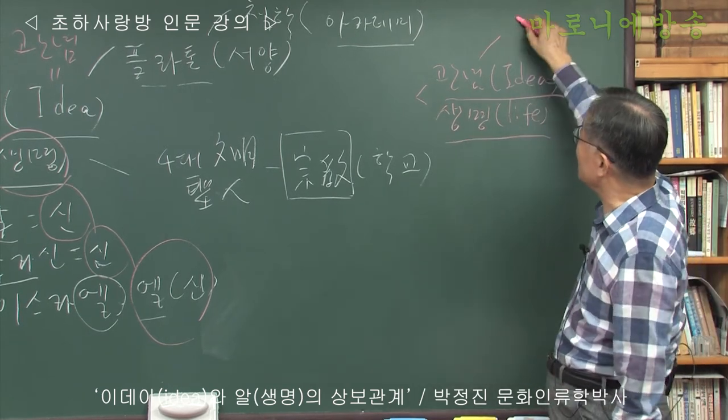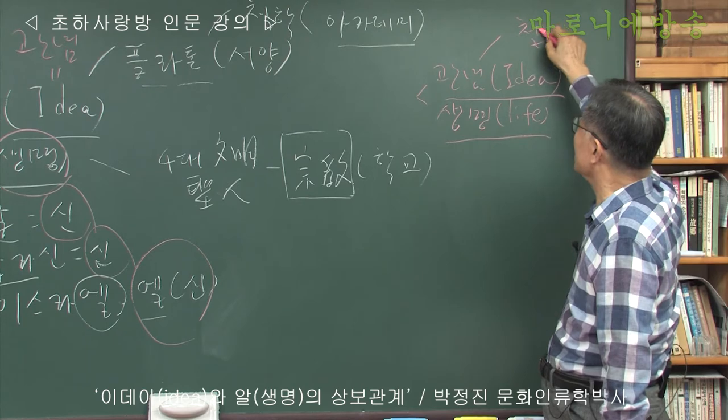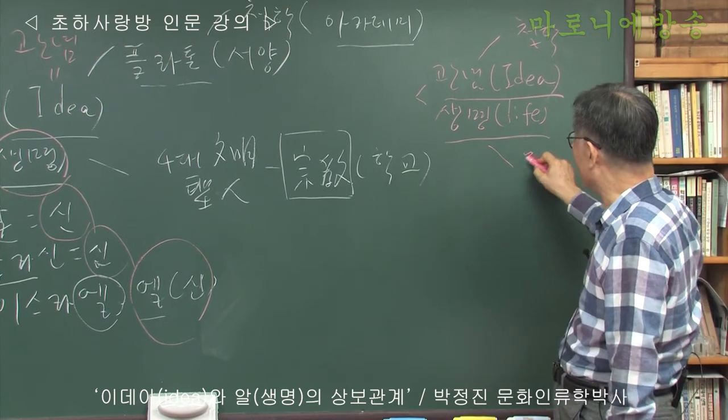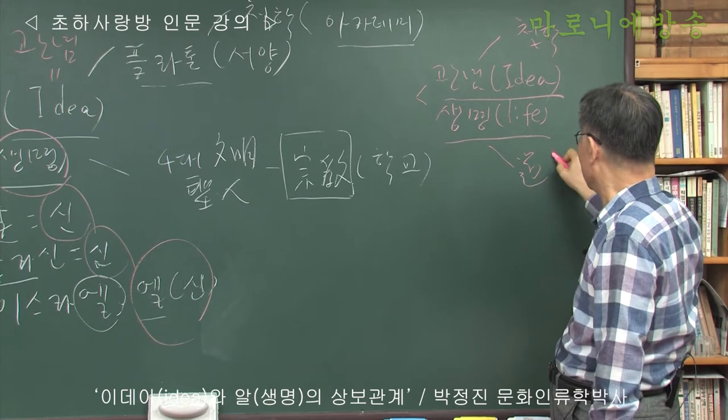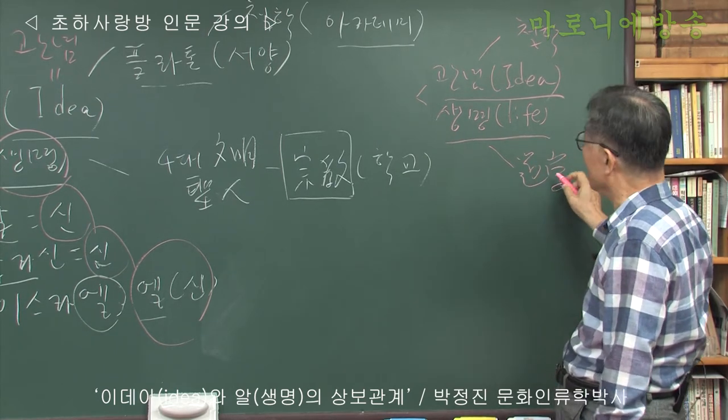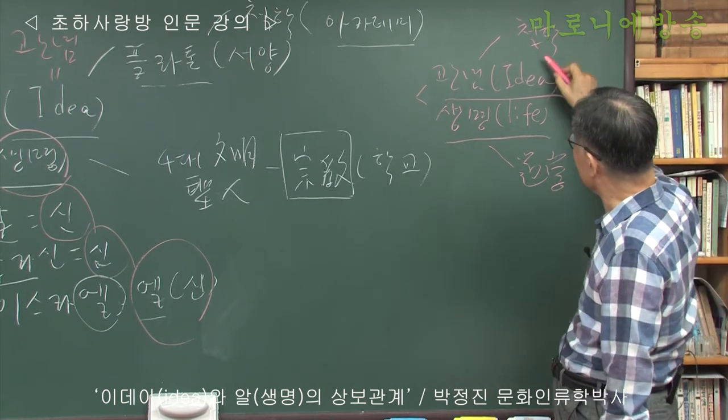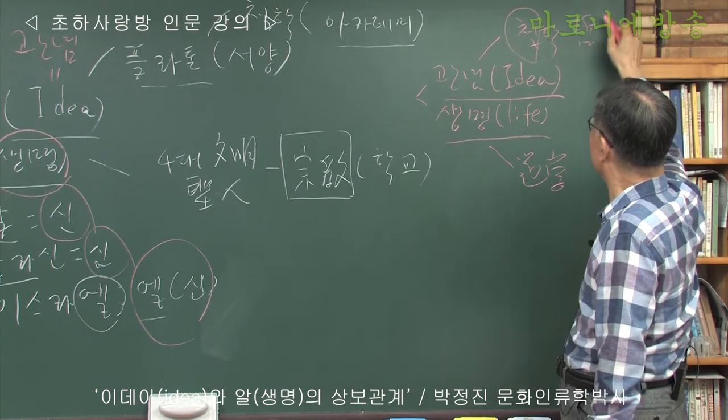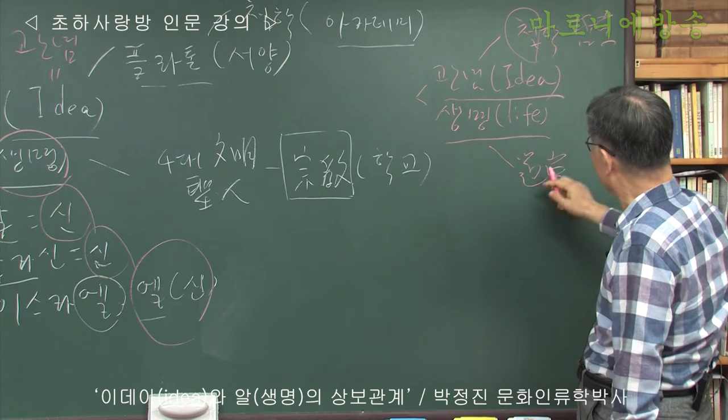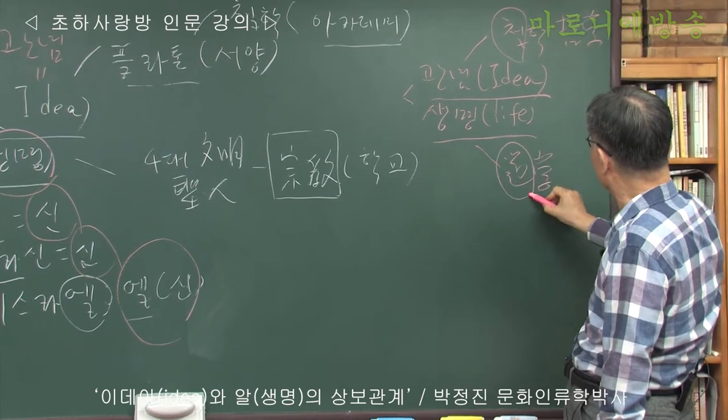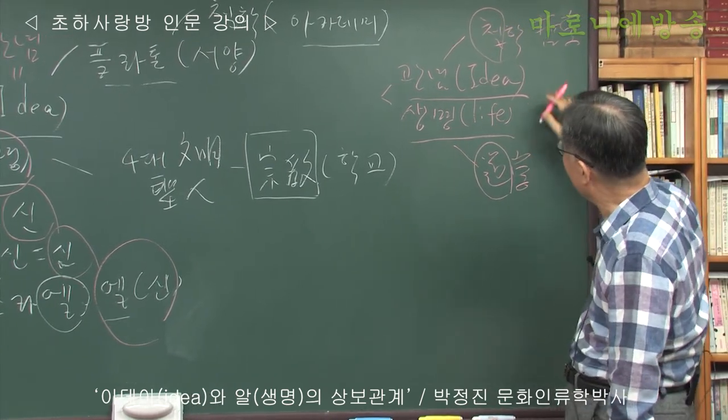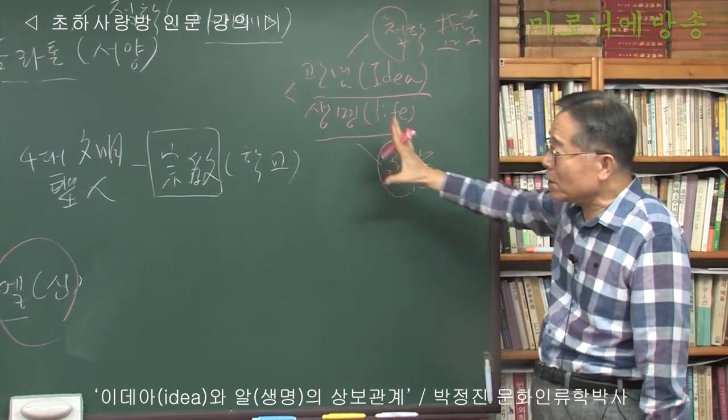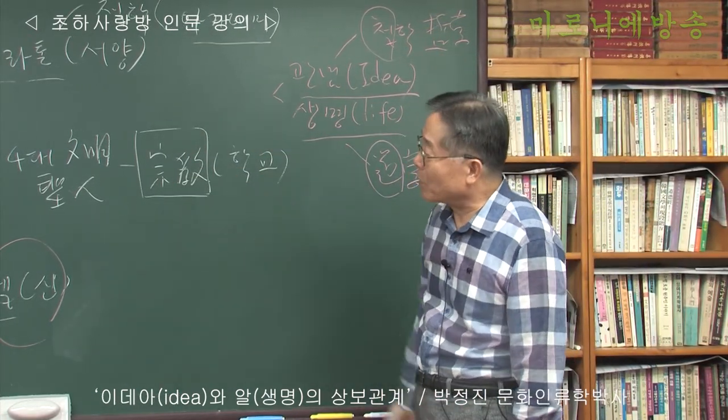이렇게 보면 이게 이제 철학이 성하는 나라고 철학이 성하고, 생명은 뭡니까. 이게 도학이거든요. 생명은 도학이란 말이에요. 철을 추구하고 철학. 이 철자죠. 철학이죠. 도학. 이게 생명이죠. 도학. 철학을 추구하느냐 도학을 추구하느냐 이렇게까지도 이제 인류 문명을 볼 수 있어요.